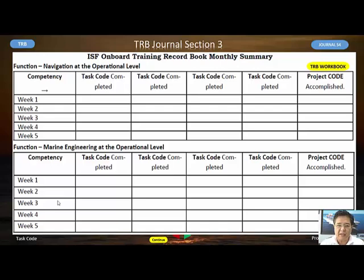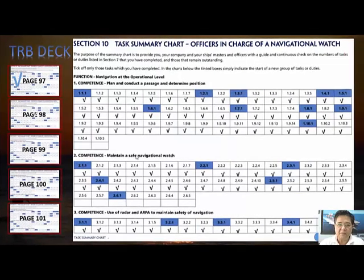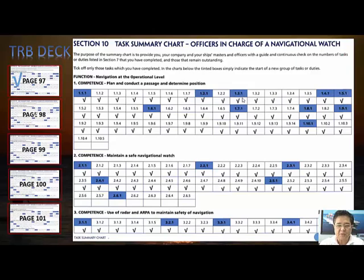To fill up this form when you are already one month on board, first check your training record book. On the deck side, go to page 97 — section 10 — the task summary chart. When you complete tasks, you check the boxes in this task summary. For example, competencies already done include: plan and conduct a voyage, maintain navigational watch, and use of radar and ARPA to maintain safe navigation.